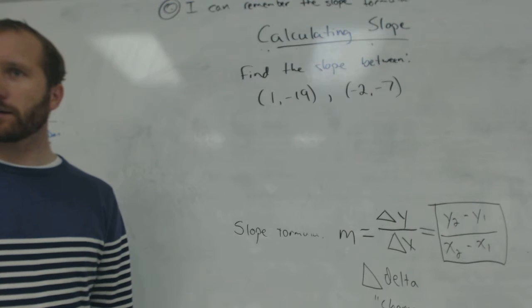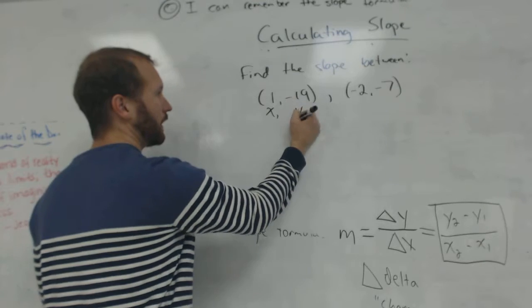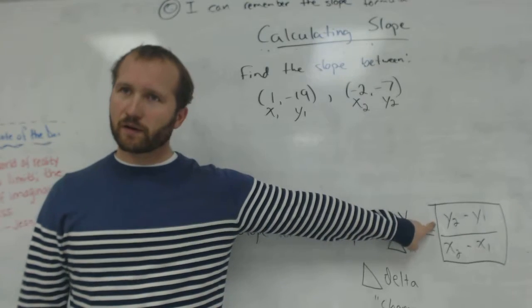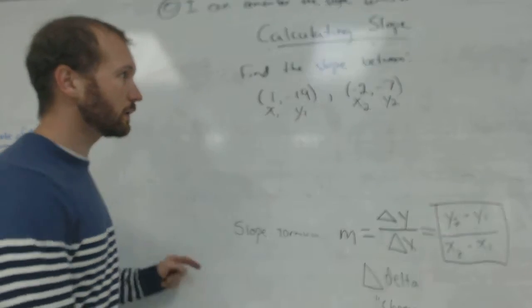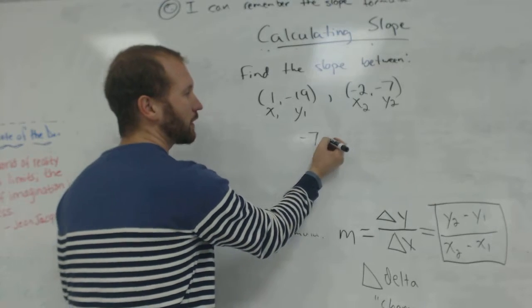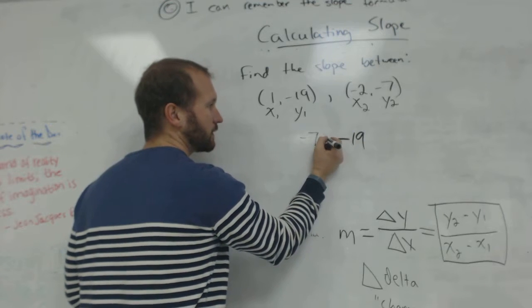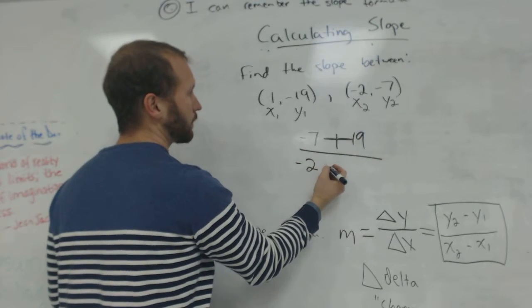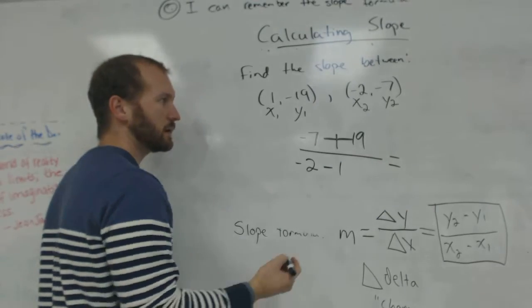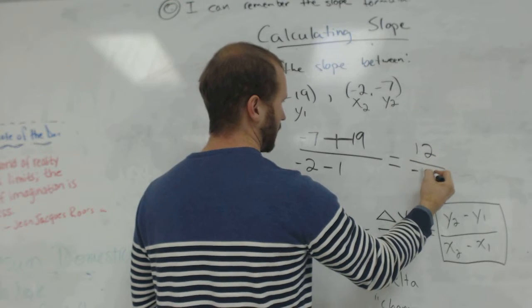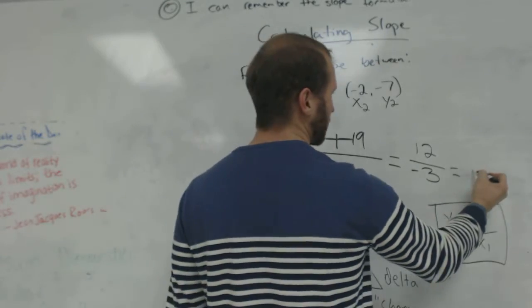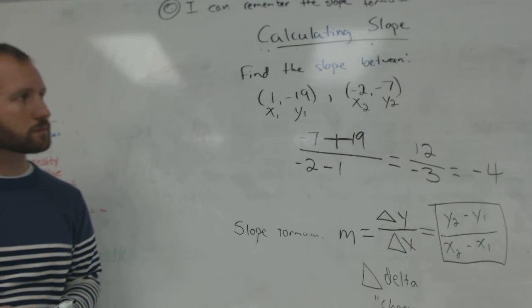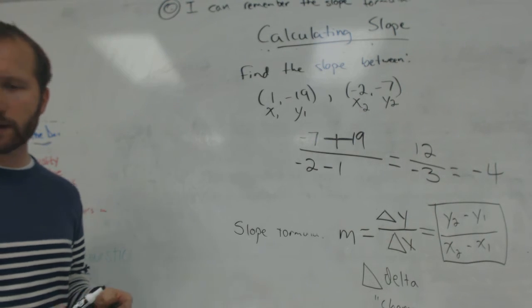Step one. Label the points. X1, Y1, X2, Y2. Step two. Here's our formula. What is Y2? Up here, negative 7. What is Y1? Negative 19. So remember, minus negative 19, that turns into plus 19. X2 is negative 2 minus 1. At this stage, you could use a calculator. You would get 12 over negative 3. And then you want to simplify that. So 12 over negative 3 is negative 4. We just did number 1 and 2 on the homework.